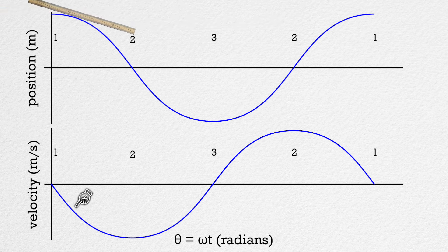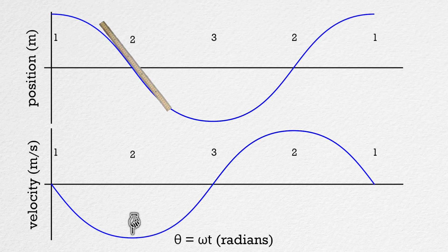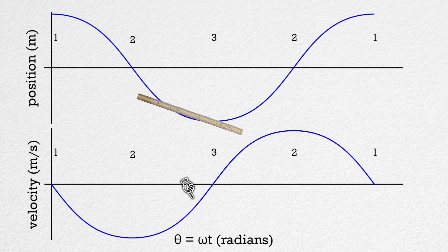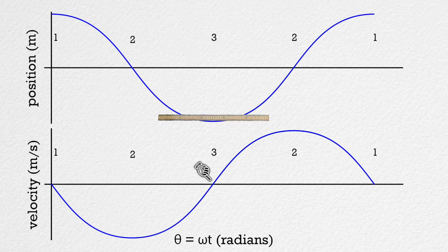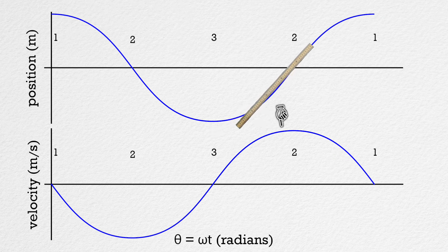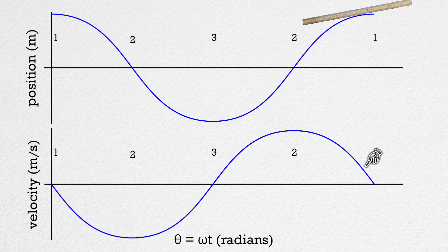The slope of the position graph at position one is zero, which is why the velocity graph is zero at one. As we go from one to the first position two, the slope of the tangent line becomes negative and slowly becomes more negative until we get to two, which is why the velocity is negative between one and two. The slope starts to increase after we pass position two and eventually goes back to zero at three, which is why the velocity has its largest negative value at the first position two and then increases to zero at position three. Then the slope is positive and increasing from three to two, reaches a maximum value at two, and then decreases to zero at one, which is why the velocity increases from zero at position one to its maximum value at two and then decreases to zero from two to one. These graphs show that the slope of the position graph is the velocity graph.